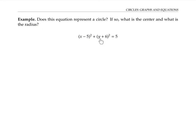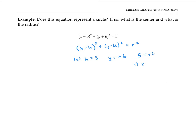Suppose we're given an equation and we want to decide if it's the equation of a circle, and if so, what's the center and what's the radius? This equation matches the form x minus h squared plus y minus k squared equals r squared. If we let h be five and k be negative six — since subtracting a negative six is like adding a six — then five must be our r squared, so r is the square root of five. Our center is the point five, negative six.